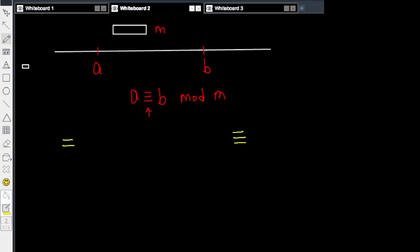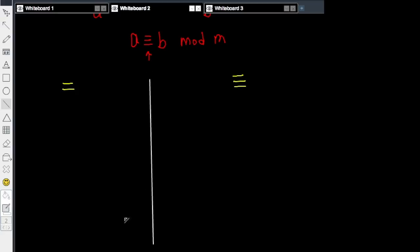This symbol of congruency is very similar to the symbol of equality. So what we will do next is compare these two symbols and show that they are indeed very similar in nature. First, we will work with three simple properties: reflexive, symmetric, and transitive.